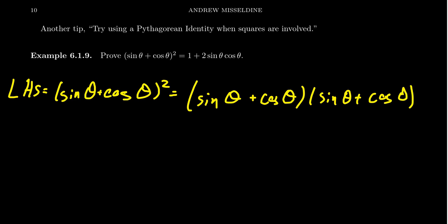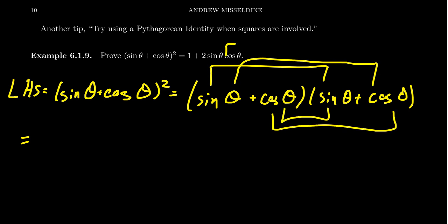For which when you FOIL that out, right, first, outside, inside, last. So you have all of those. So there's the F, O, I, L right here.